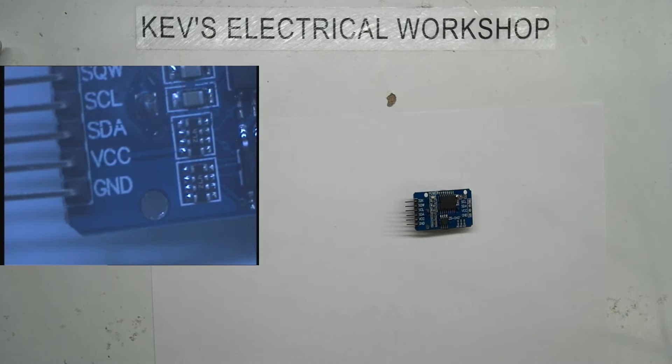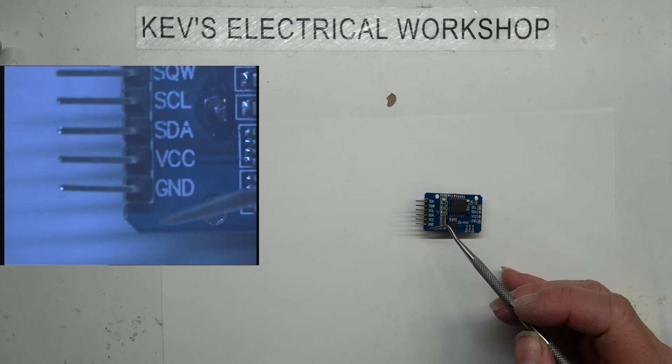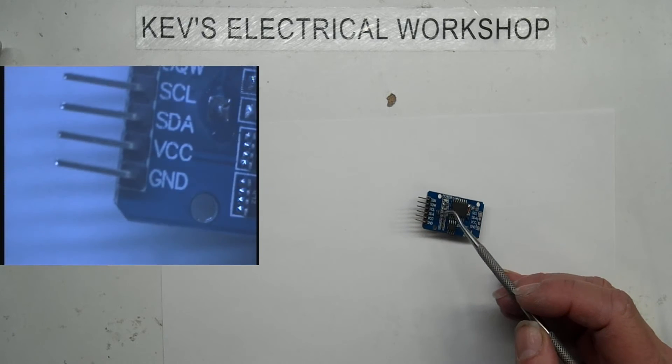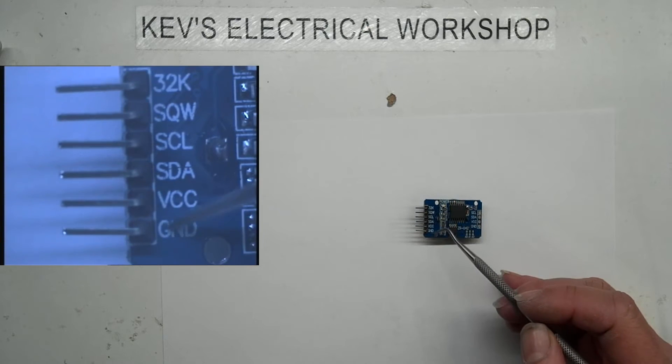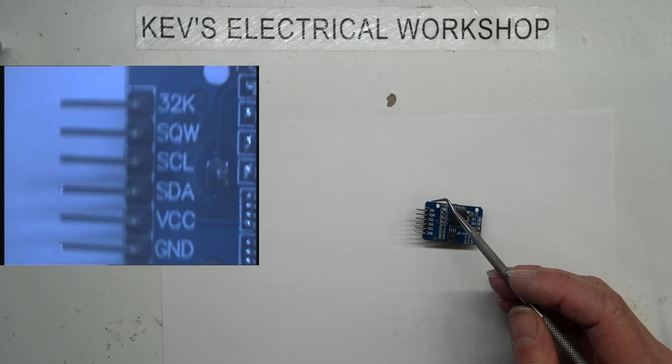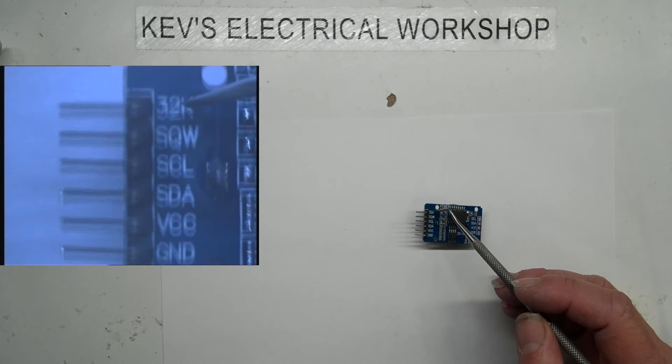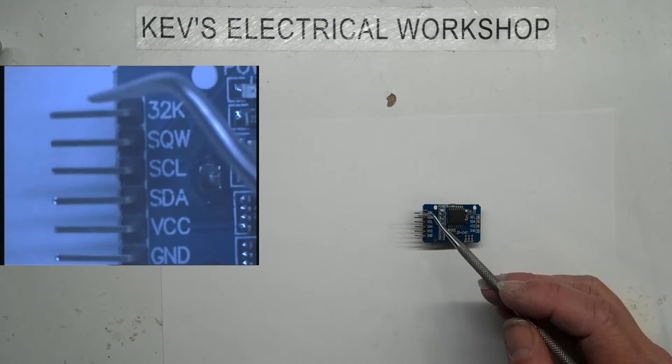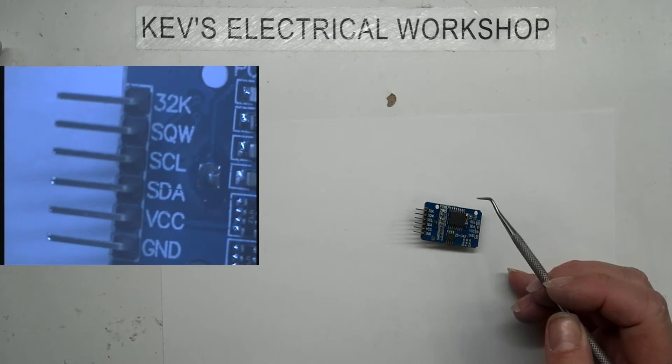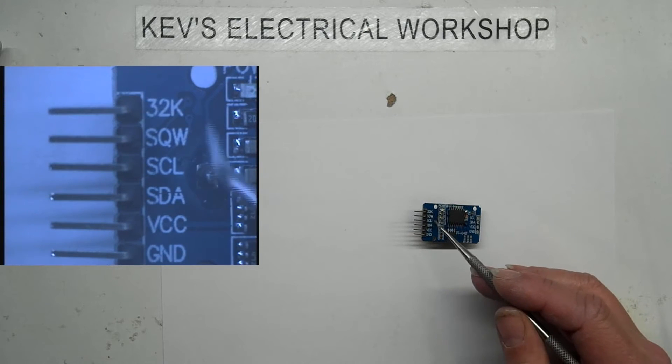As you can see under the scope probably a bit better. So you've got ground, obviously I presume it's 5 volts and maybe 3.3. I haven't looked up. Right like I said that's for daisy chaining and your SCL and SDA to communicate with it.